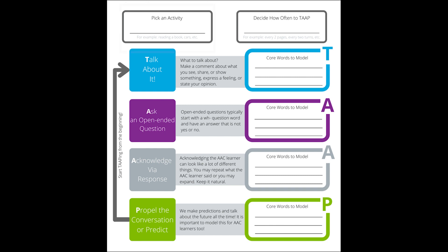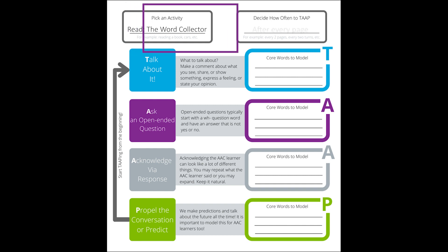The first step to tap your way through is to pick an activity. We've already done that — we're reading the book The Word Collector. Next, you decide how often you will stop and tap. For this story, we suggest tapping after every page of the book.